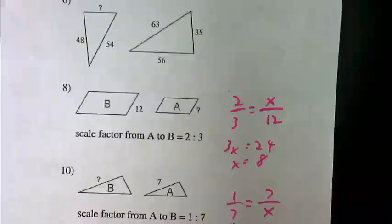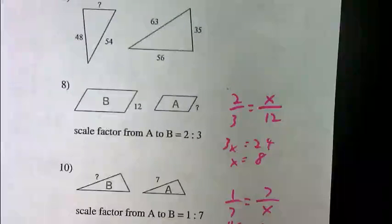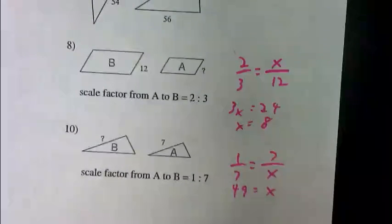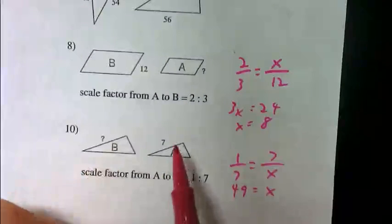Cross-multiply and solve. 49 equals X. Don't have to even divide anything on that one because 1 times X is just 1X. That's it.